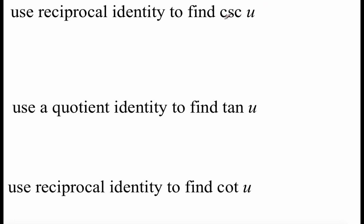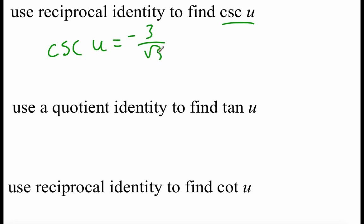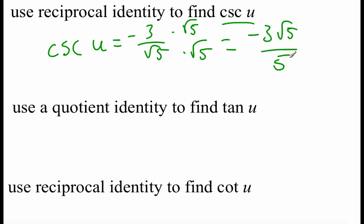If we have the sine, we should be able to find the cosecant because they're just reciprocals of each other — we flip that fraction over. So our cosecant of u equals negative three over root five. But we can't leave our answer with a radical on the bottom, so we rationalize by multiplying top and bottom by root five, giving us negative three root five over five.